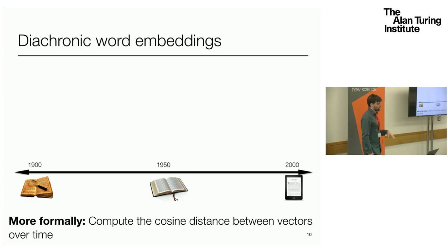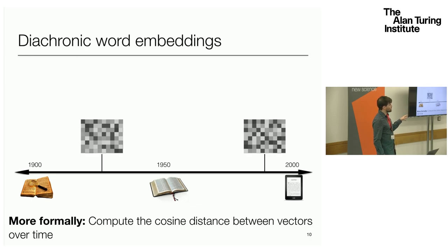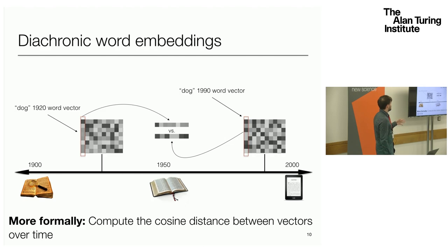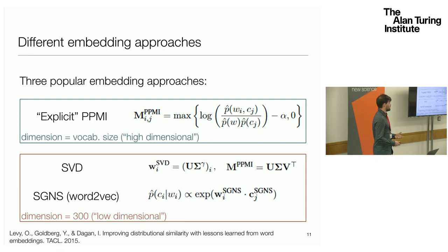Taking this to the diachronic or historical setting, the basic idea of how we measure semantic change over time is: we take historical texts from a particular time period — say 1920 and 1990 — we build word vectors for these two different time periods. Then to measure the rate of semantic change for a word, we take that word's vector in those two different time periods and measure how much that vector has changed — specifically using the cosine distance between these two vectors. People don't actually just use raw co-occurrence counts because they come with a number of drawbacks.